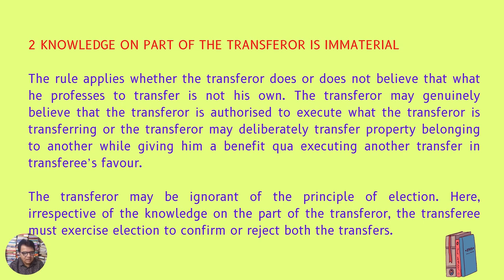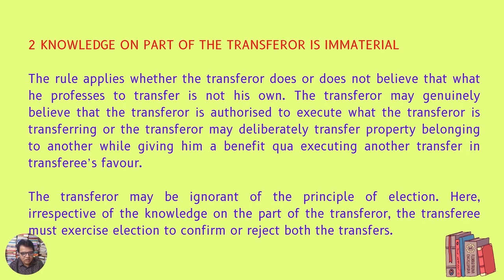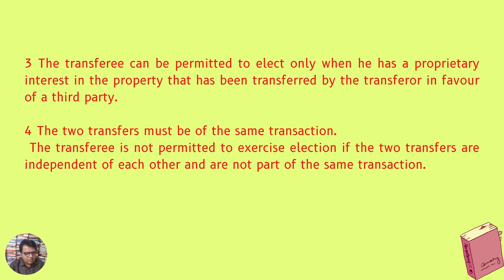Second, knowledge on the part of the transferor is immaterial. The rule applies whether the transferor does or does not believe that what he professes to transfer is not his own. The transferor may genuinely believe he is authorised to execute the transfer, or may deliberately transfer property belonging to another while giving that person a benefit by executing another transfer in the transferee's favour. The transferor may even be ignorant of the principle of election. Irrespective of such knowledge, the transferee must exercise election to confirm or reject both transfers.